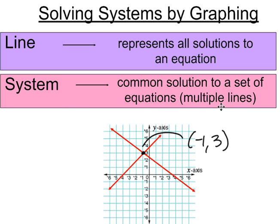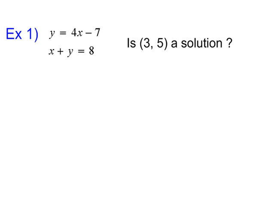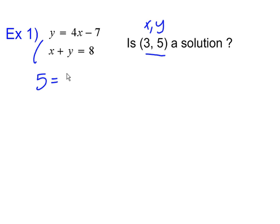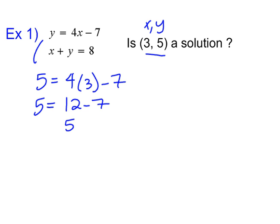Now we can solve for this algebraically and see if a certain point is a solution. When we're looking at these two equations, is the point (3, 5) the solution — is this where these lines collide? We remember that this is x and this is y, so we're going to plug them in and replace them for the right numbers. Five equals four times three minus seven. We do our order of operations: four times three is twelve, twelve minus seven is five.